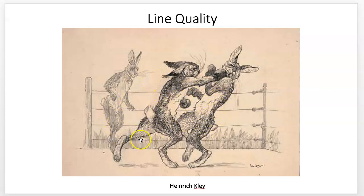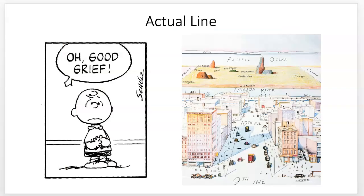Line quality is also determined by the medium — pen, pencil, ink with a brush. This piece by Heinrich Kley is a printmaking piece from etching: an etched metal plate put through the press, so it has a different quality. You can see how much ink is shown by how thick the line is. The value and density of the line is part of its quality as well.